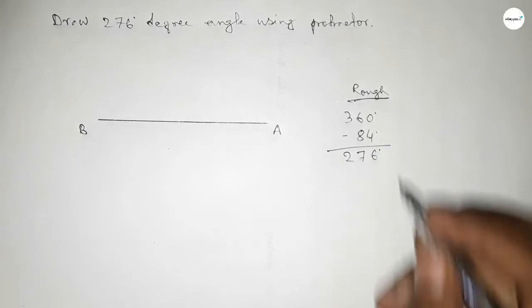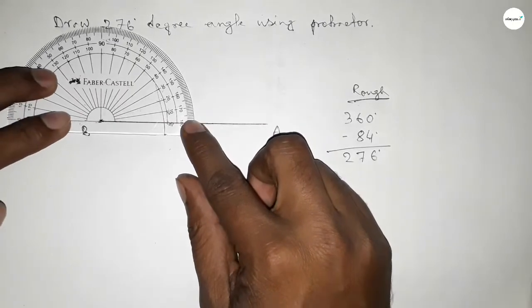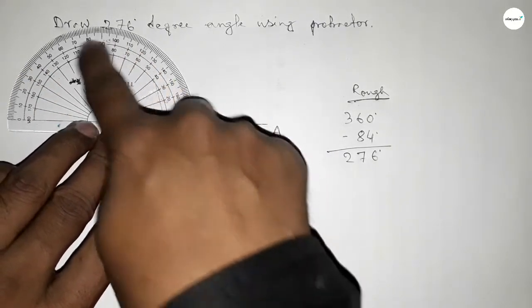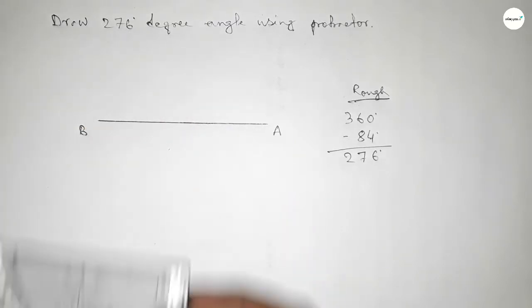So first we have to count 360 degree angle on the point B. So putting the protractor on the point B by this way and counting angle. So this is 180 degree angle plus putting the protractor on the point B by this way and counting total angle.